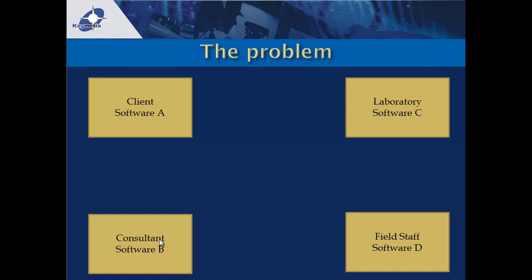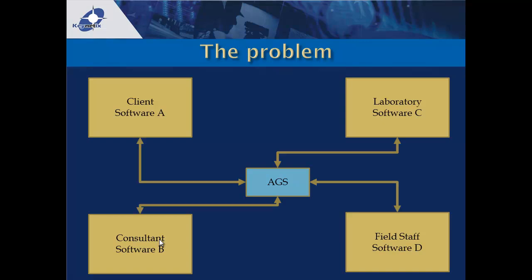Suppose the manufacturers of software B and software D hate each other — they'll never talk, never share secrets, and really don't want to be compatible with each other's programmes. We've reached an impasse. The answer the AGS came up with was to fix something in the middle: a file format that sits between all applications, so that if every application can read and write that format, they're all effectively compatible.